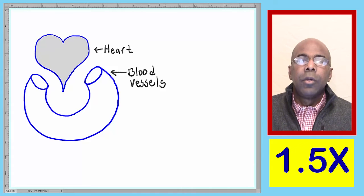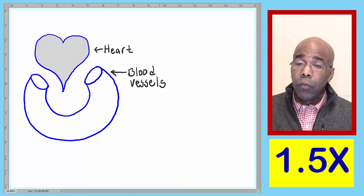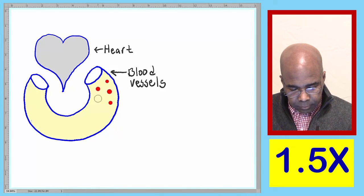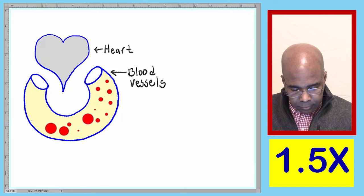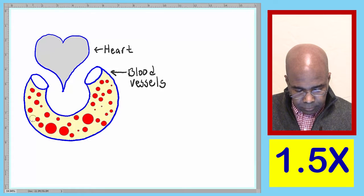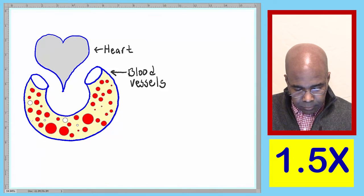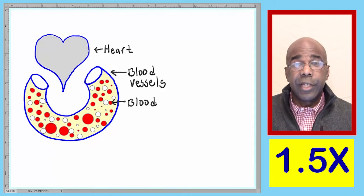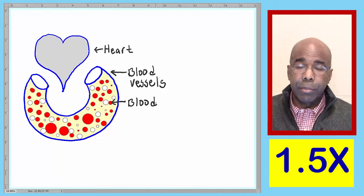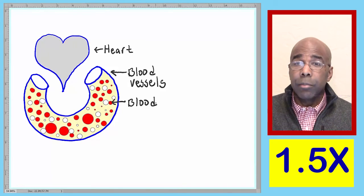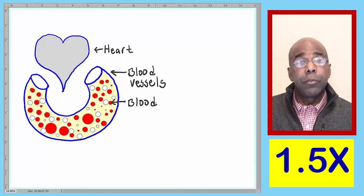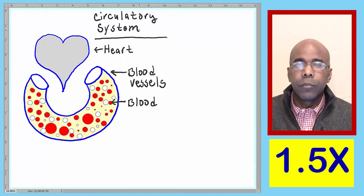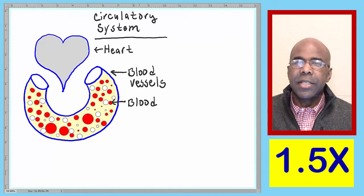Our last component of the circulatory system will be the blood itself. Represented here is the blood, showing the red blood cells and the white blood cells. These three components — the heart, the blood vessels, and the blood — make up the circulatory system.